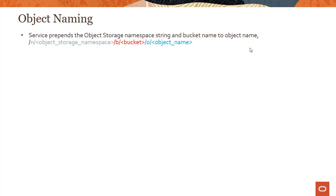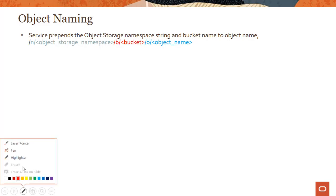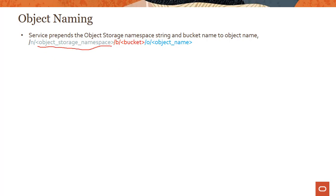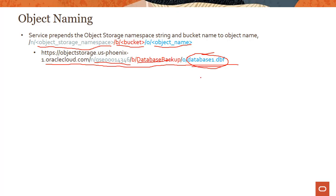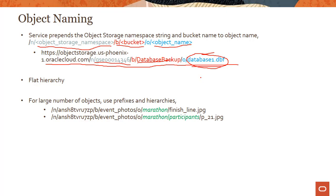So how do you name objects? The service prepends the object storage namespace string and the bucket name to object names. For example, you have the namespace — which comes from your tenancy — followed by the bucket name, and then the object name. So if you have an object like database.dbf, which looks like a database backup file, and you use the PUT object API to store it, the resulting URL contains the namespace, the bucket, and then the object. This is the fully qualified string you need to reference the object.